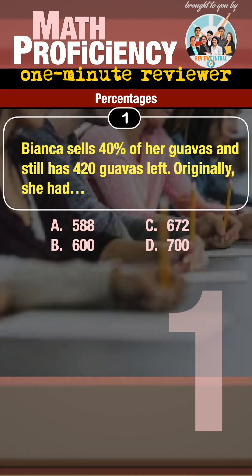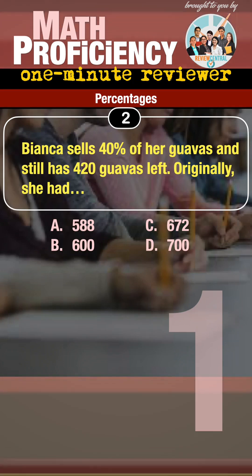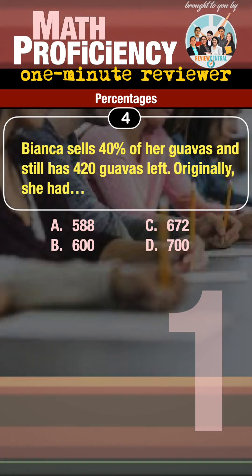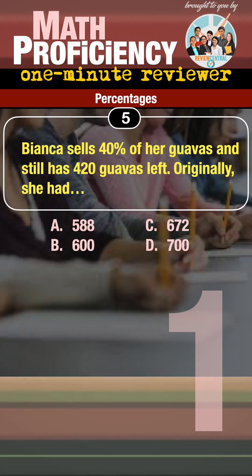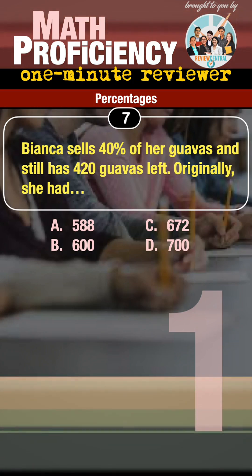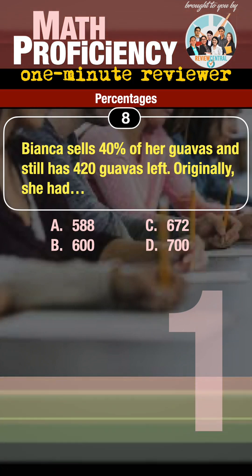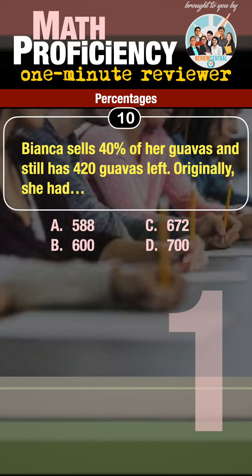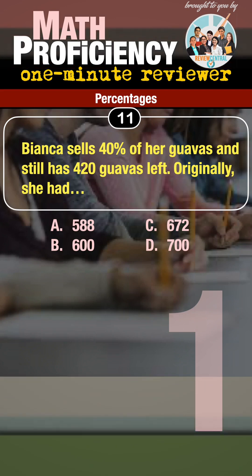1-minute mathematics proficiency reviewer — percentages. Bianca sells 40% of her guavas and still has 420 guavas left. Originally, she had how many?